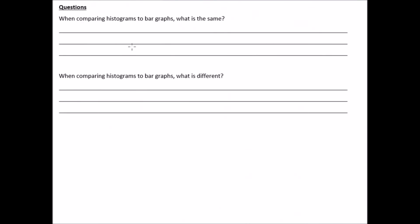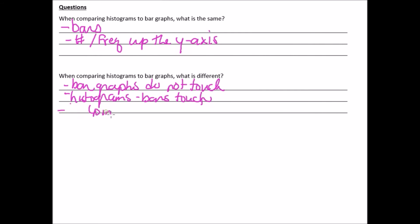Okay. So just in general, when comparing histograms to bar graphs, what is the same? Okay. So they both have bars. Okay. And they both have like numbers or the frequency we can put up the side of the, let's call it the Y-axis. Okay. And what is different? So, bar graphs do not touch. Whereas histograms do. So histograms, the bars touch.